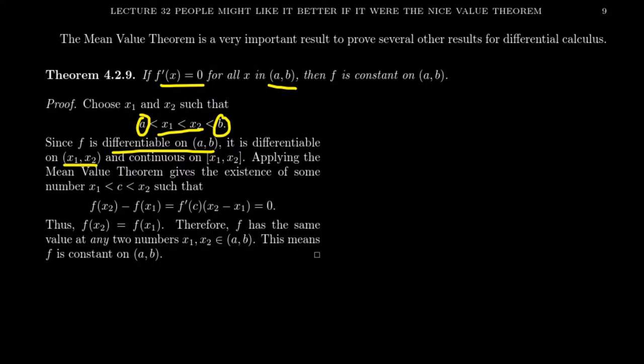Since f is differentiable on the entire interval a to b, in particular it'll be differentiable at the points x1 and x2. If you're differentiable, then you are also continuous. So we know that f will be differentiable on the open interval x1 to x2, and likewise continuous on the closed interval x1 to x2, because we have a stronger understanding of this function given it's differentiable on this interval. The reason I have to make these comments is that in order to invoke the mean value theorem, I need to check that its conditions — its assumptions — are satisfied. So the mean value theorem applies to this interval x1 to x2.